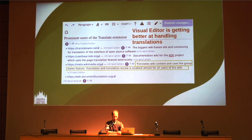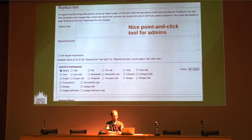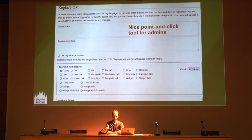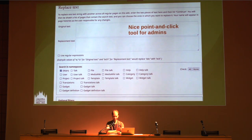MediaWiki supports automated manipulation of pages by using an API, but for simple replace operations it's nice to have a UI. Last year we installed the Replace Text extension, which I have put into good use. It can only be used by administrators and has limited support for regular expressions. Funnily, I use it also to find stuff, because the results are better than what you get with the normal search. We should probably look into installing a proper search backend.